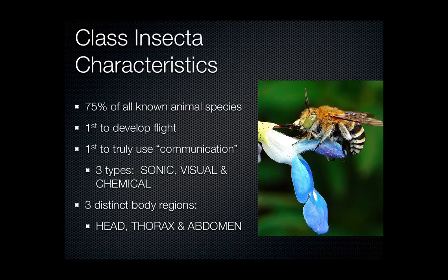Chemical communication is going to be primarily pheromones, and this is used a lot. There is a fighting pheromone, there's a pheromone for mating, and there are several different chemicals they'll use to communicate with each other. If you've ever wondered why you were stung by a bee and then several other bees stung you, it's because when they sting, they give off an attack pheromone, which causes the group to attack.